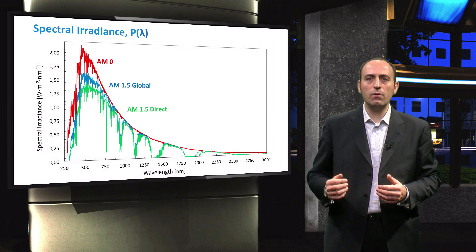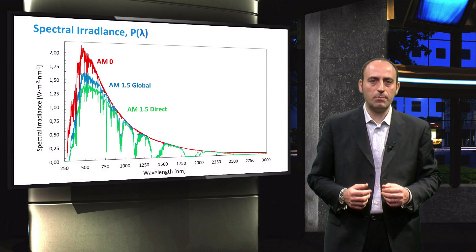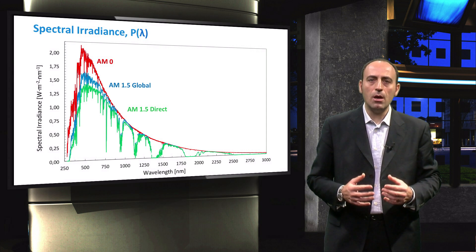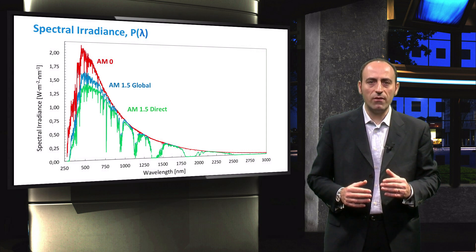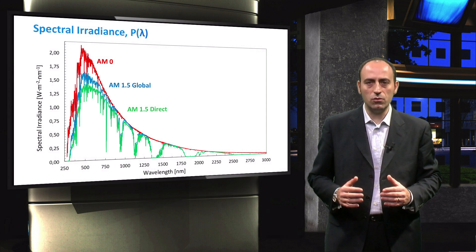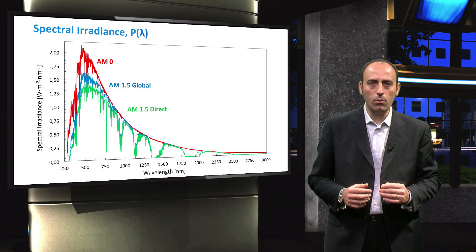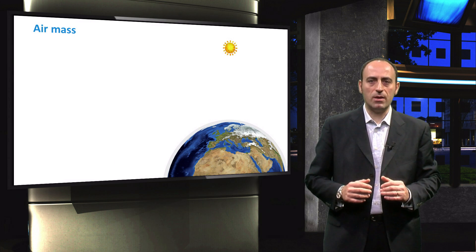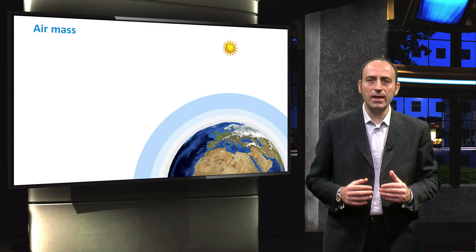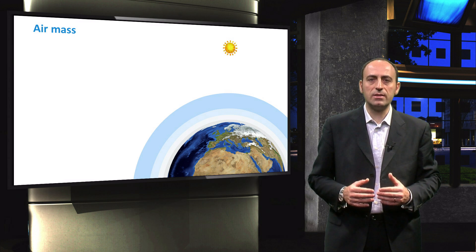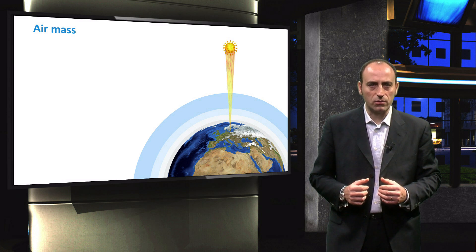The green curve is the direct AM1.5 spectrum. It is obtained from the global AM1.5 spectrum by considering only the light shining in the direction normal to the illumination plane. The shape of the spectrum is very similar to the blue curve, but its intensity is sensibly lower in the visible part of the spectrum. Now I want to remind you of the meaning of air mass, which is a measure of the length of the light path through the atmosphere. The reference to calculate the air mass is when the Sun is at its zenith, where we can identify two spectra.